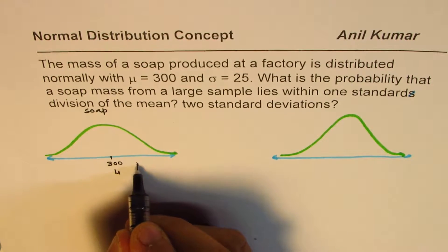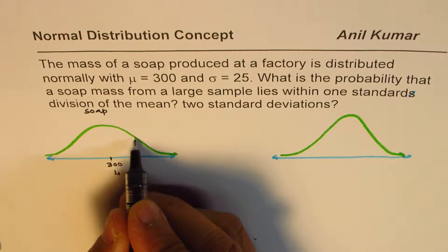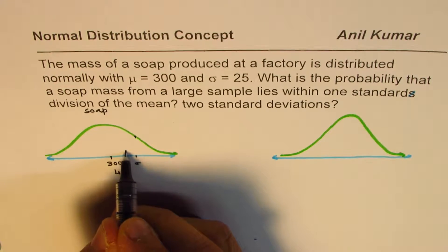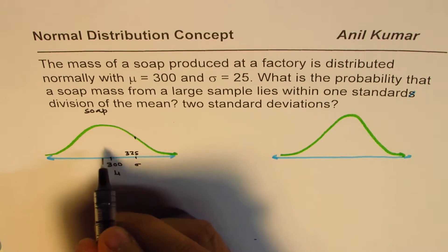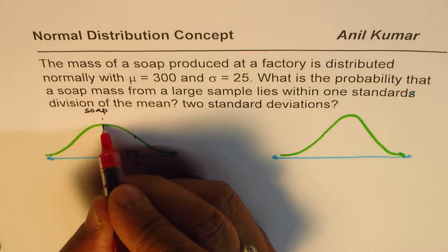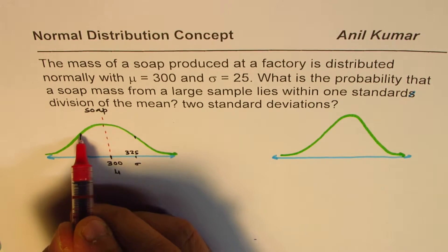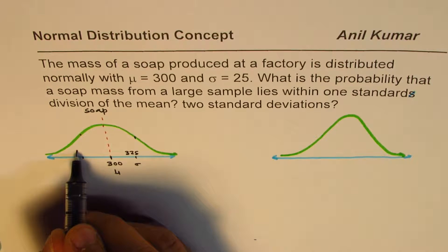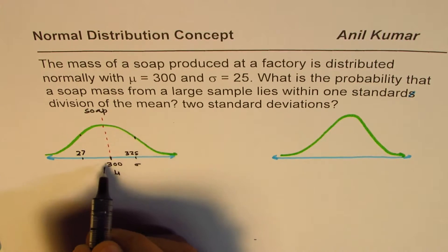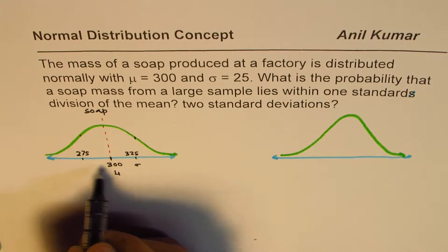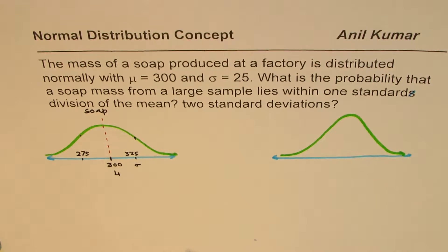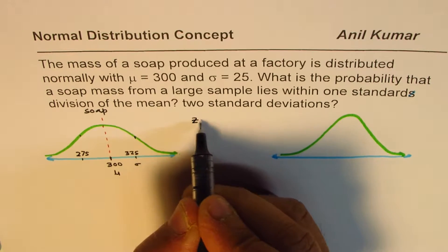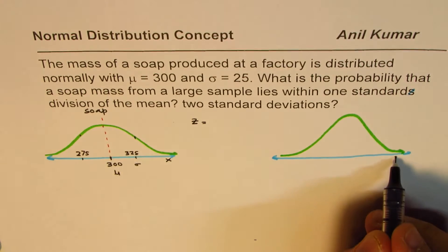Standard deviation sigma is 25. If I add 25, I get the point where the curve transitions from concave down to concave up — so this point is 325. From the symmetry, we know these graphs are symmetric about their mode. So from symmetry, the other point is 300 minus 25, which is 275. That is one sigma away from the mean. These are x-values, and we'll translate them to Z-values.